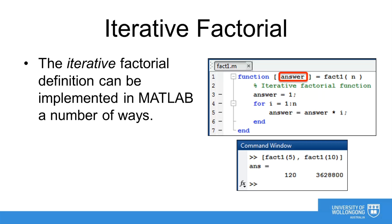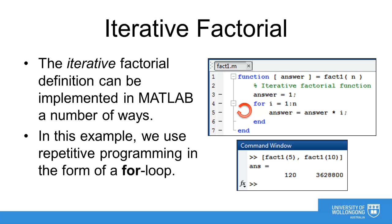To simplify things in our implementations, we are going to assume n is only ever positive or zero. In this first example of the factorial function, we use repetitive programming in the form of a for loop to accomplish the task. Notice that our for loop chooses values of i from 1 to n, and for each value of i, multiplies the answer by i. We can run a few examples from the command window to confirm that the function is operating as expected.